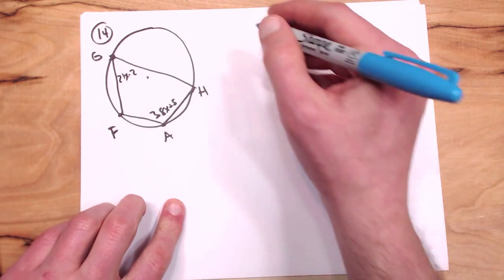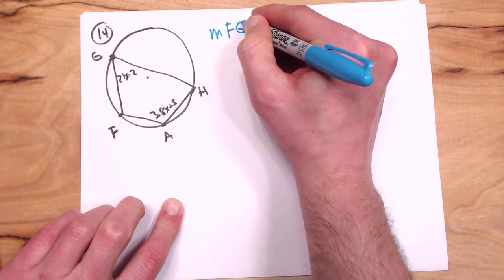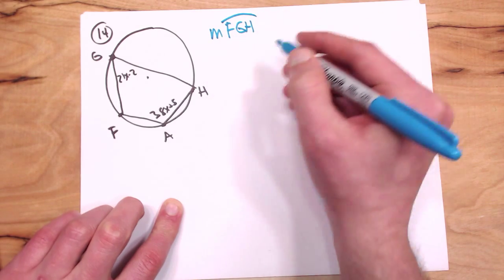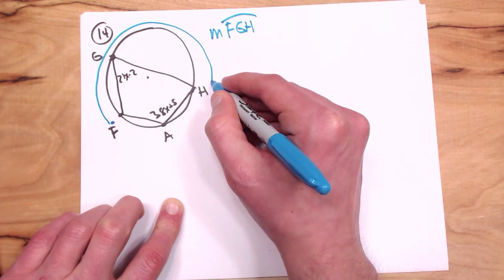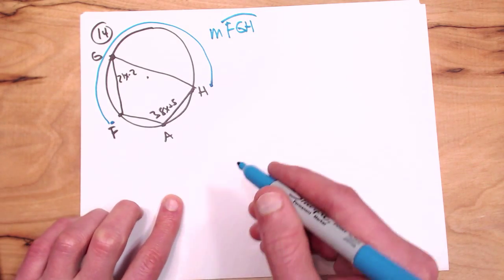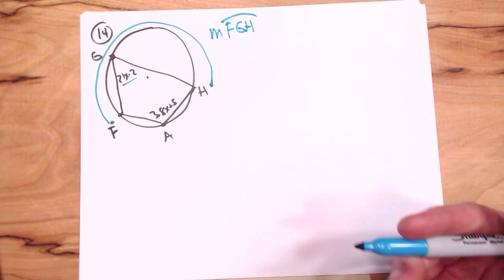Okay, so here we see, one more thing. We're trying to find the measure of arc angle FGH, so we'd like to know the arc angle from here all the way around the circle to here. A good place to start on almost all of these when you have a variable like X, I'd like to start by solving for X.